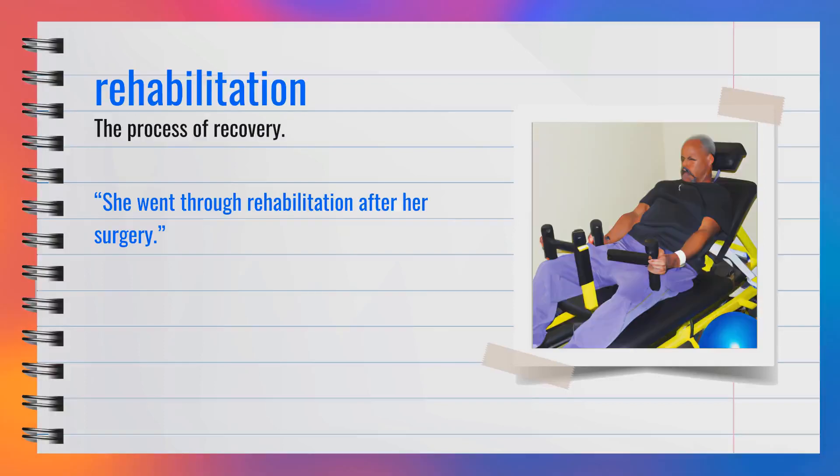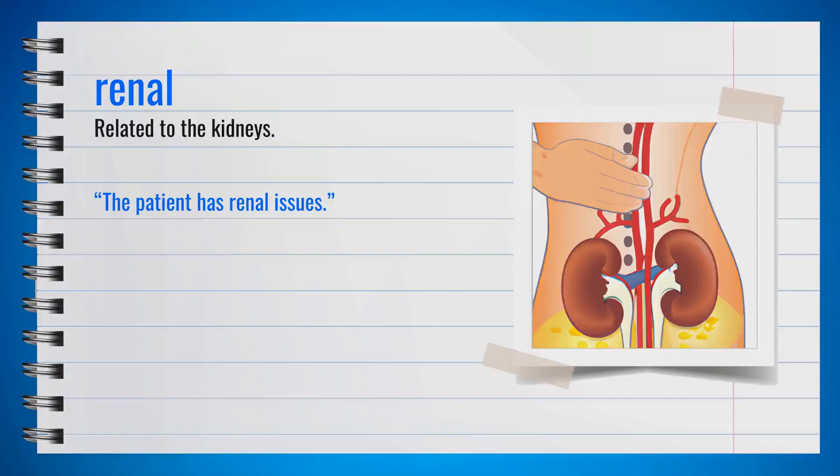The word rehabilitation, spelled R-E-H-A-B-I-L-I-T-A-T-I-O-N, is a noun pronounced 'rehabilitation.' It means the process of recovery. For example, she went through rehabilitation after her surgery. In summary, rehabilitation is the process of recovery.